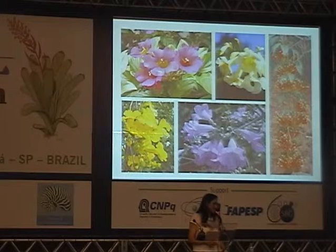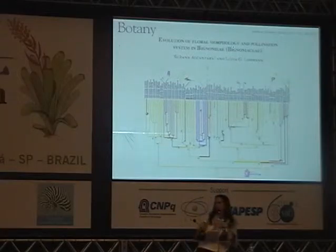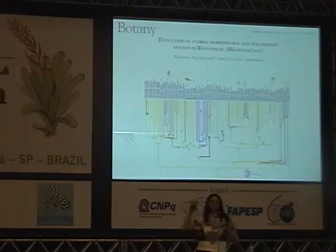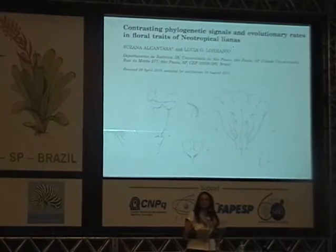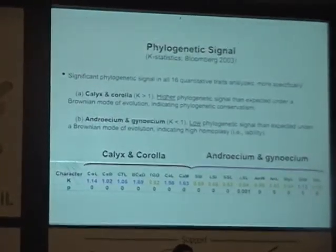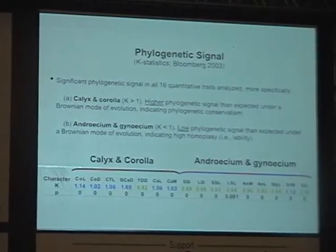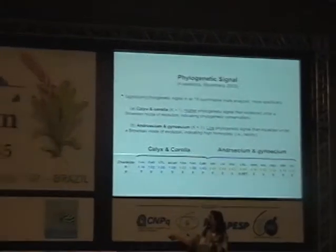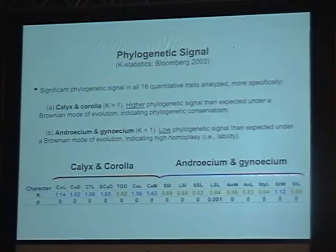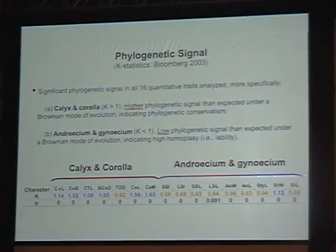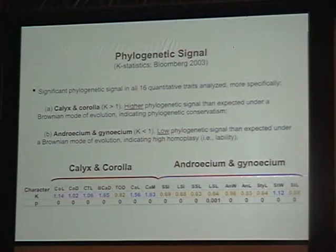We're also interested in patterns of flower evolution. We first did a general study looking at discrete character evolution and found a lot of homoplasy. When we looked at continuous characters, we found something interesting: in the more external whorls — calyx and corollas — there was phylogenetic conservatism, while in the internal whorls — androecium and gynoecium — there was very high homoplasy. So closely related species have flowers of the same size, but the size of the internal whorls varies a lot, which probably drives isolation between closely related species.